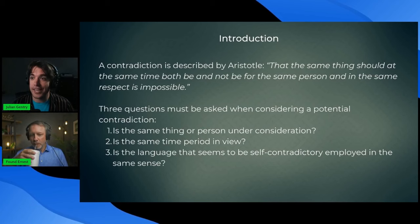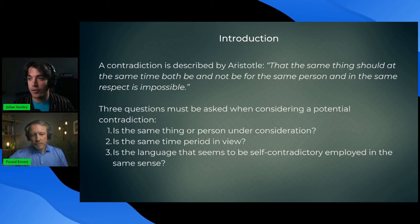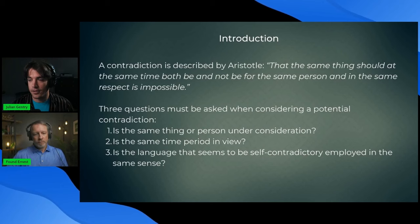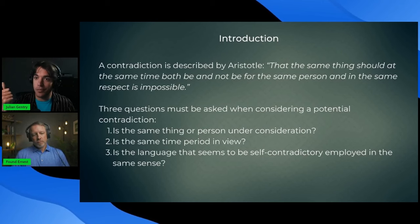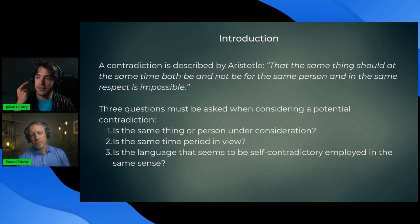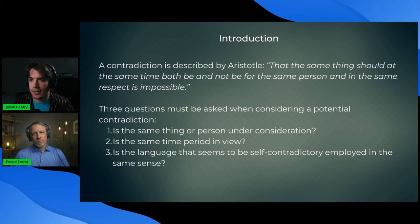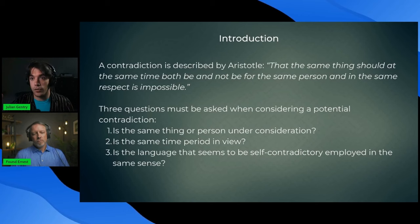That the same thing should, at the same time, both be and not be for the same person and in the same respect is impossible. So, you've got to ask three questions when considering a potential contradiction. Is it the same thing? Is it the same time period? And is it the same sense? Is the language employed in the same sense? Because there's plenty of opportunities where it could be one or two of those, but not the third, and then it's not a contradiction.